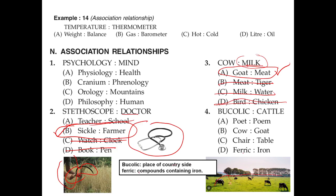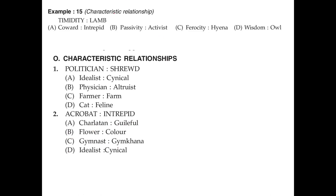Bucolic is an environment or place in the countryside for animals or agricultural purposes, and cattle are kept in bucolic places. Poet and point: point is a person, but this has nothing to do with the relationship. Cow and goat have no direct relationship. Chair and table also have no relationship. So we only have D — ferric compounds contain iron, so ferric means any compound where iron is present. Similarly, bucolic is a countryside where cattle reside.